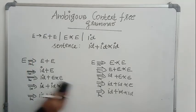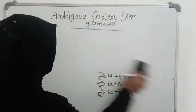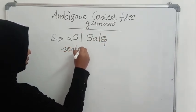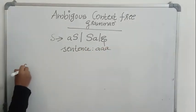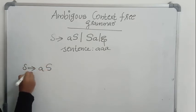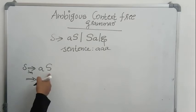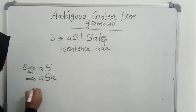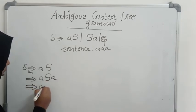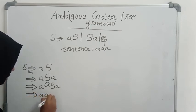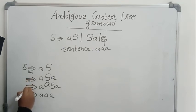We will see one more example. We will take the grammar: S gives aS or Sa or epsilon. This is the grammar, and the sentence I want to derive is aaa. So, S — I am starting with aS. I can use leftmost or rightmost, whichever is convenient. Now aS: the second S is replaced by Sa, giving aSa. Now the third time I am replacing this S with aS, giving aaSa. Now I am replacing this S with epsilon, so that it becomes aaa — that is the sentence I want to derive. And I got all this using leftmost derivation.